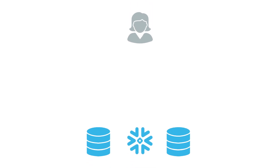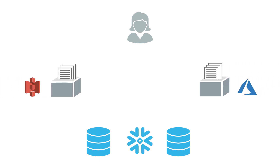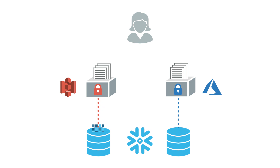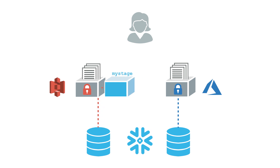However, if your data files are already staged in a supported cloud storage location, you can skip phase one and load directly from these external locations. You just need to supply the URL for the location as well as access credentials if the location is protected. You can also create named stages that point to your external locations.